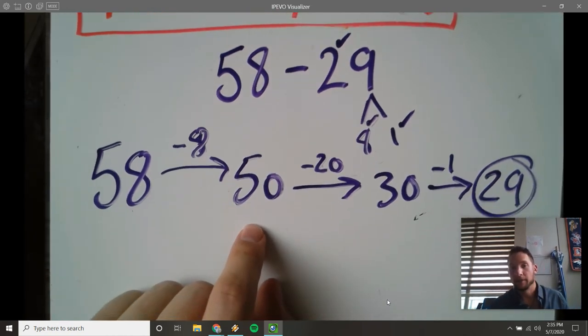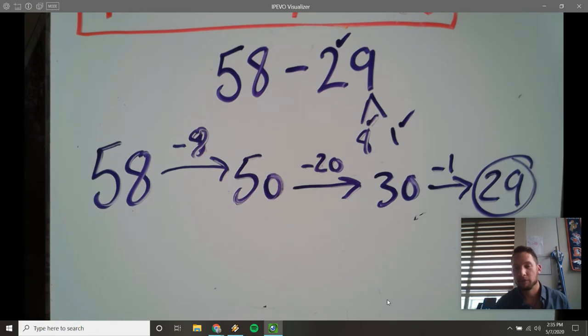So that is the arrow way method for subtraction. Hope that's helpful.